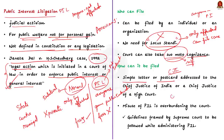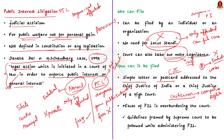Let us see some criticisms about PIL. Sometimes, PIL may give rise to the problem of competing rights. For example, when a person files a PIL against an industry which causes serious pollution to the residents of the area, the court may order the closure of this polluting industry. Here, the interest of the workmen and their families who are deprived of their livelihood may not be taken into account by the court. This is the problem of competing rights.